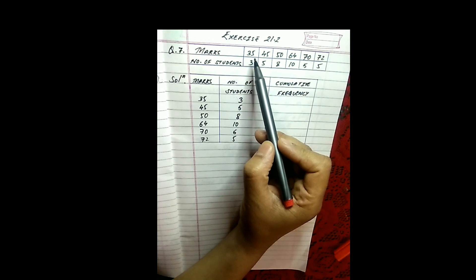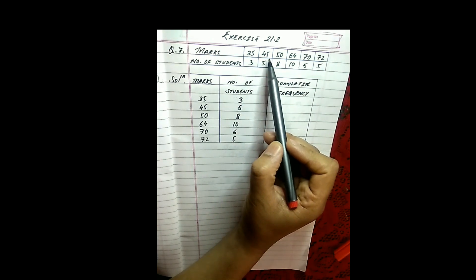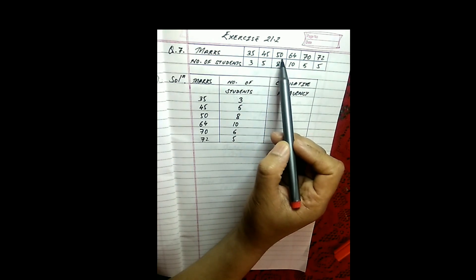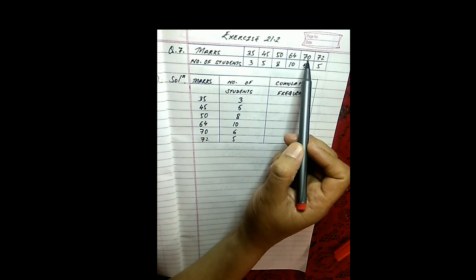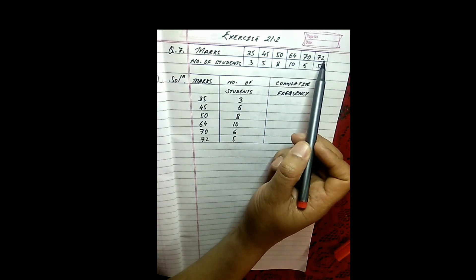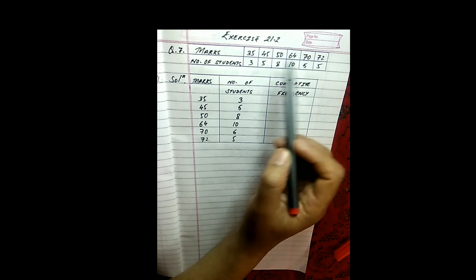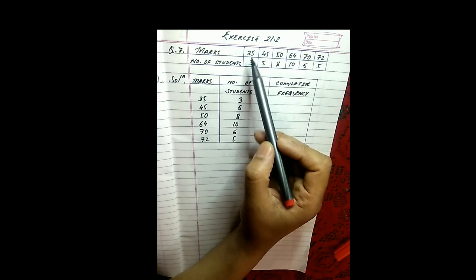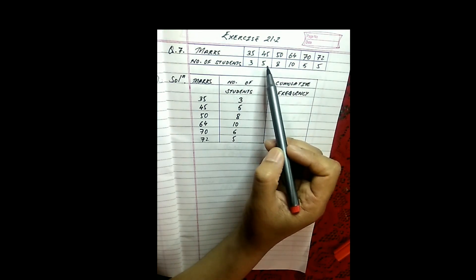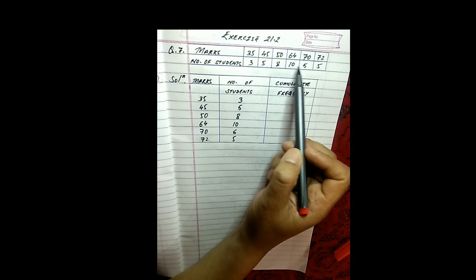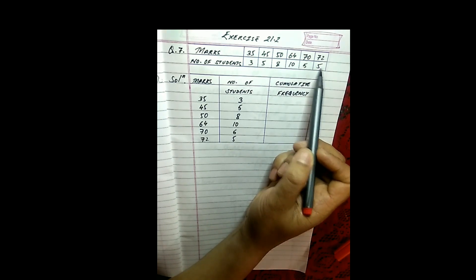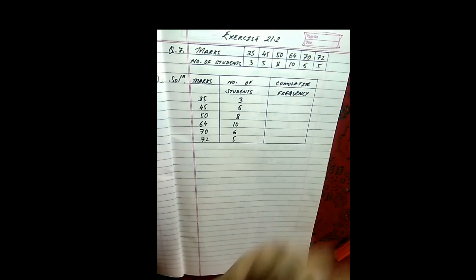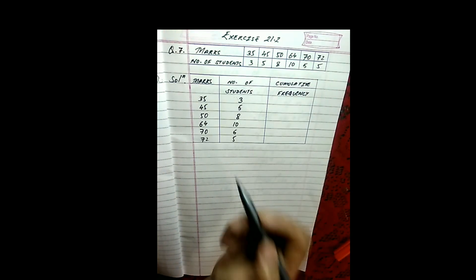The marks given are 35, 45, 50, 64, 70 and 72, and the number of students corresponding to the marks are 3, 5, 8, 10, 5, 5. Let us solve this one.